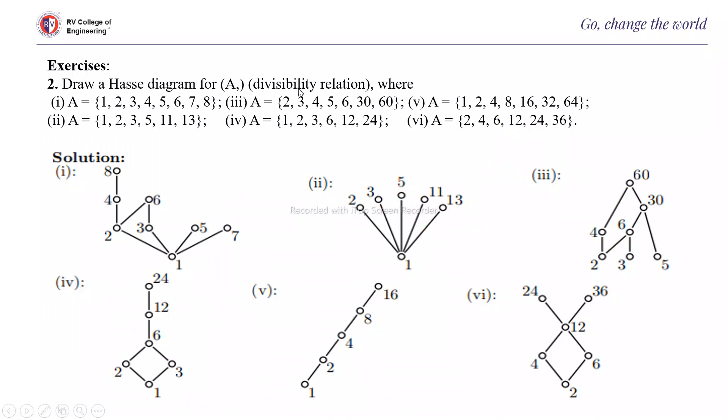Next, draw the Hasse diagram for A, that is the divisibility relation where A = {1, 2, 3, 4, 5, 6, 7, 8}. And for all other sets, it is written here.